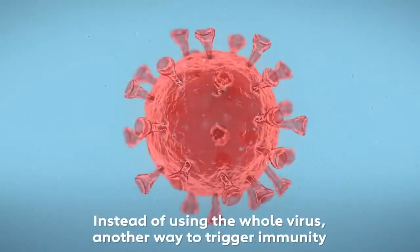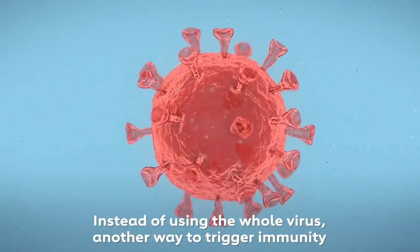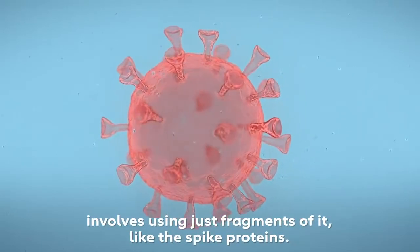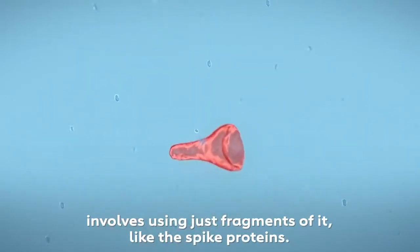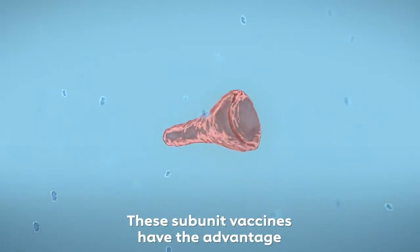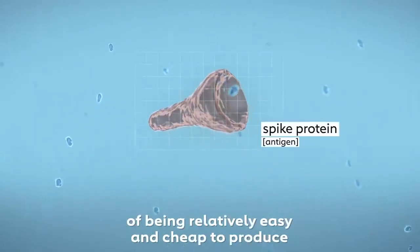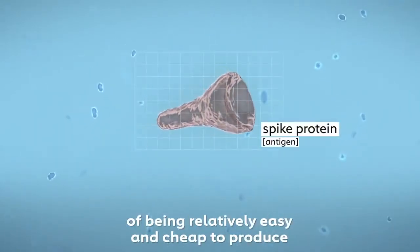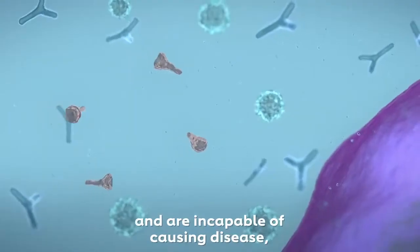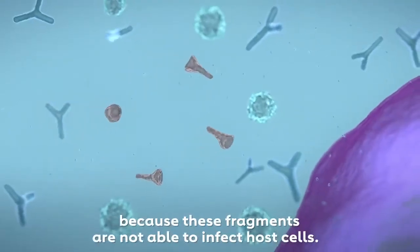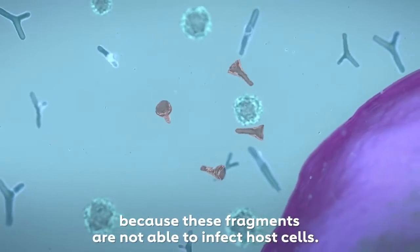Instead of using the whole virus, another way to trigger immunity involves using just fragments of it, like the spike proteins. These subunit vaccines have the advantage of being relatively easy and cheap to produce and are incapable of causing disease because these fragments are not able to infect host cells.